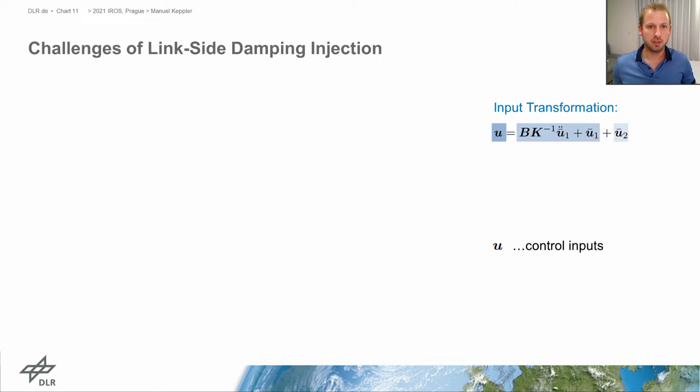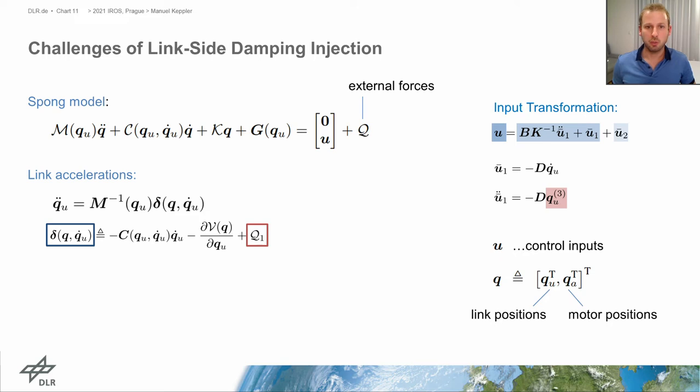Revisiting the input transformation, we see that the implementation of the link side damper through the virtual control input U1 requires feedback of the link jerk signals since the second time derivative of U1 is required for the implementation of the input transformation. An important property of the SPONG model is that the jerk signals can be computed without numerical differentiation, and we see that the jerk signals depend on the time derivative of the external forces. As a consequence, during harsh impacts when the external forces vary quickly, the jerk signals grow large. In fact, when the external forces assume a step-like variation, the jerk signals grow unbounded. This is the reason for the control input spikes we saw in the previous video.